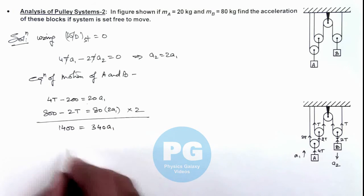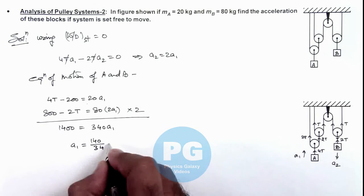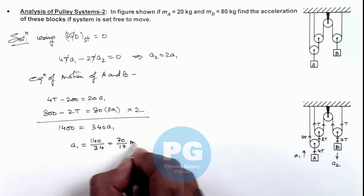So the value of a₁ here we are getting is 1400 by 340, so this will be 140 by 34, or further we can write it 70 by 17 meter per second square.